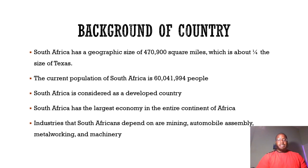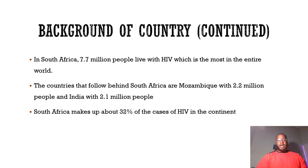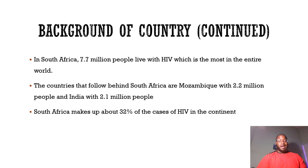South Africa has the largest economy in the entire continent of Africa. The industries that South Africans depend on are mining, automobile assembly, metalworking, and machinery. Additionally, 7.7 million people live with HIV in South Africa, which is the most in the entire world. The countries that follow are Mozambique with 2.2 million and India with 2.1 million. South Africa makes up about 32% of HIV cases in the entire continent of Africa.